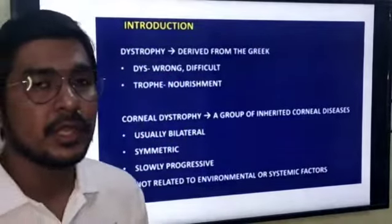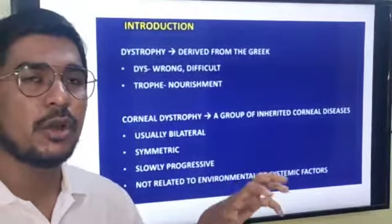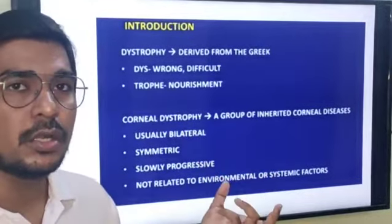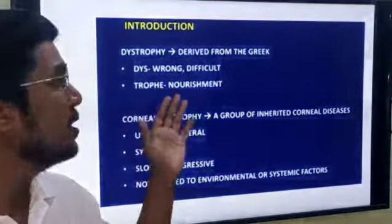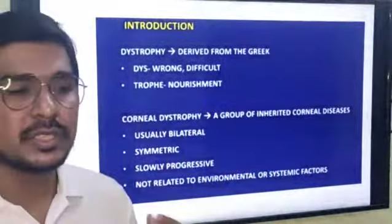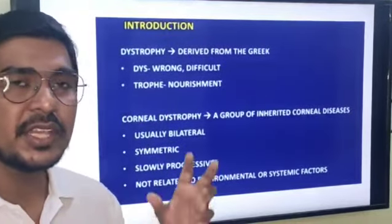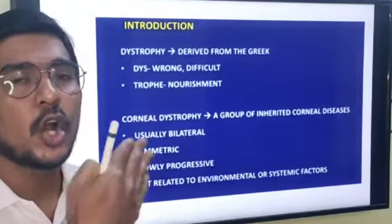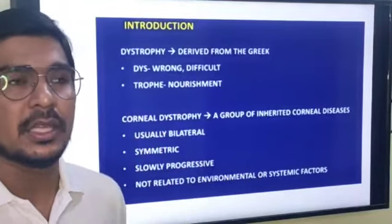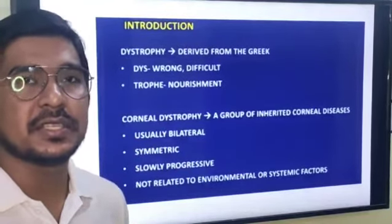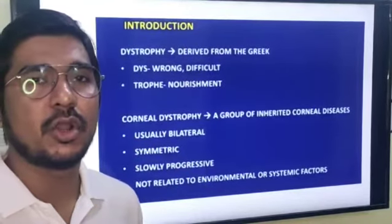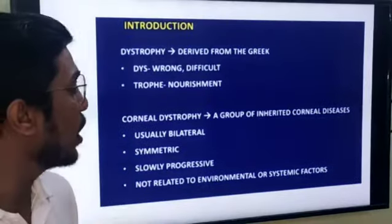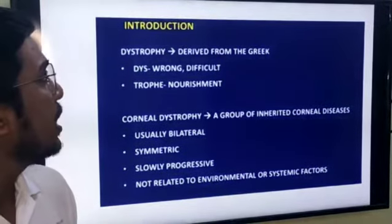For the introduction, you need to understand that the word 'dystrophy' comes from two Greek words: 'dys' means something is wrong, and 'trophy' means nourishment. So dystrophy means something is wrong with the nourishment of the cornea, and that leads to the disease called corneal dystrophy.